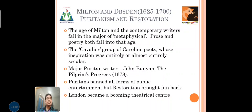Next, Milton and Dryden. The age was 1625 to 1700. Puritanism and Restoration were also prescribed as subtopics. The age of Milton and the contemporary writers falls in the measure of physical and metaphysical. Did you know about the difference between physical and metaphysical poetry? The prose and poetry both fall into the age. The cavalier groups or Carolinian poets were those whose inspiration was entirely almost secular. The major Puritan writer was John Bunyan — The Pilgrim's Progress — a familiar work in the PG syllabus. The Puritans banned all forms of public entertainment; they closed theatres, music halls, and dramas, banning all entertainment, giving only religious and church-oriented themes.